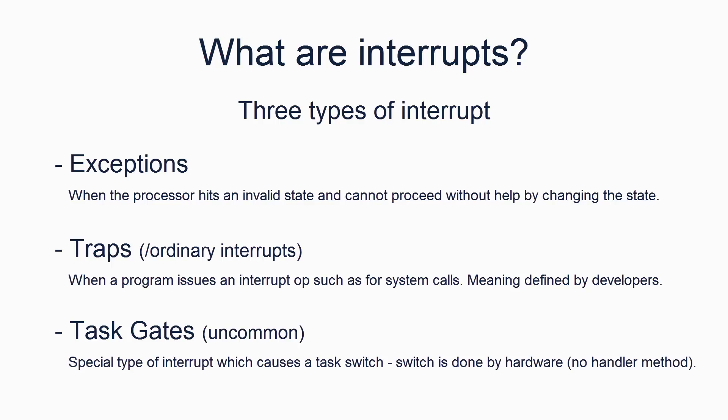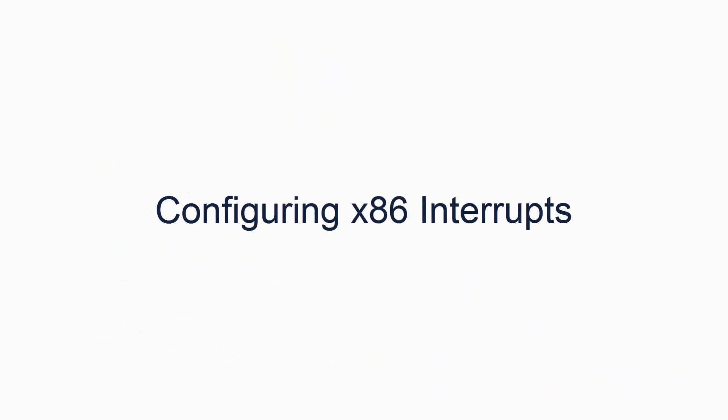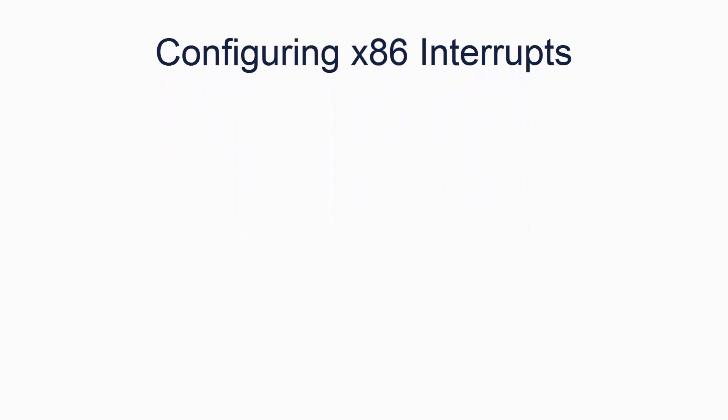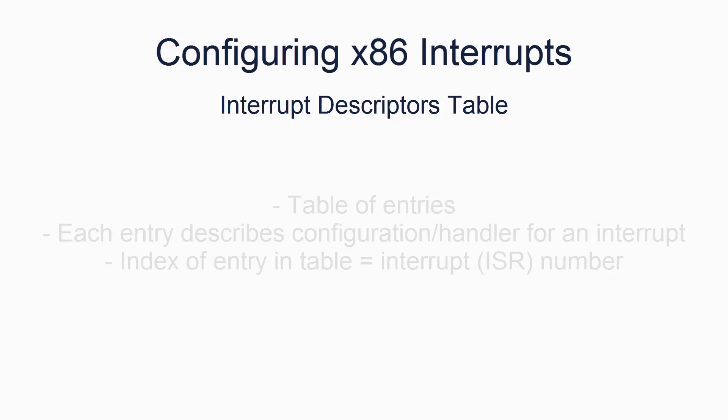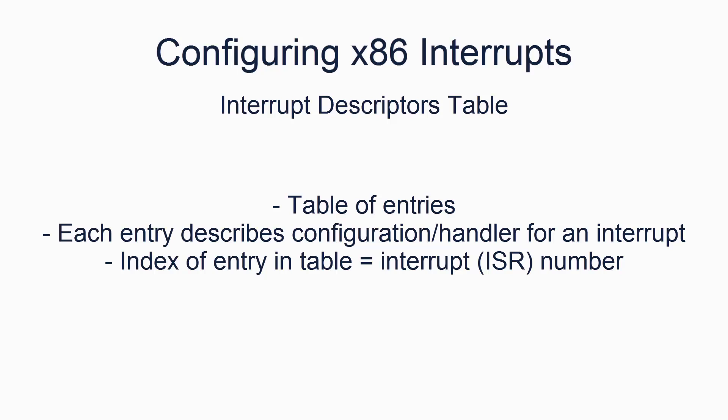Now we know what interrupts are, let's look at how we can configure interrupts on the x86 processor. The x86 processor uses something called the Interrupt Descriptor Table. As the name suggests, the IDT is a table of entries, each of which tells the processor what to do for each interrupt.